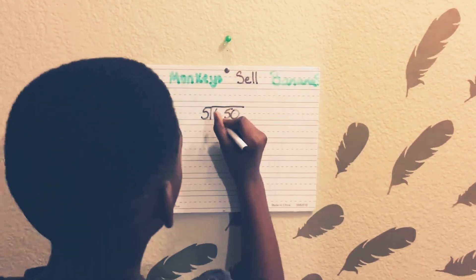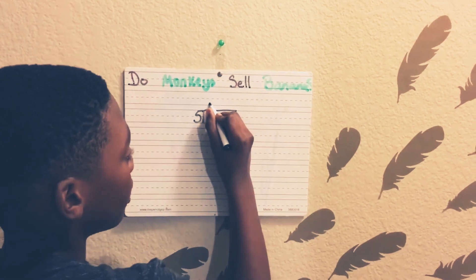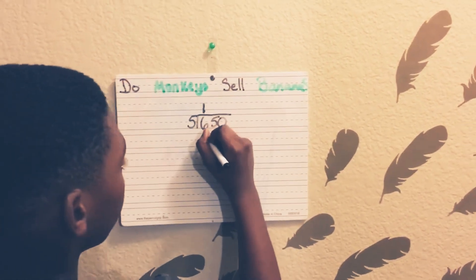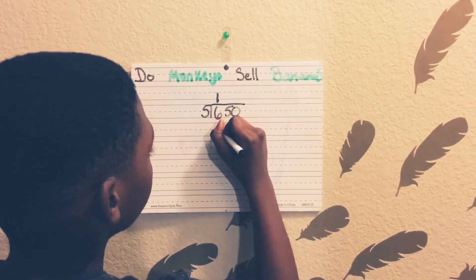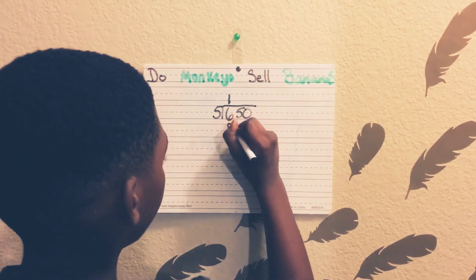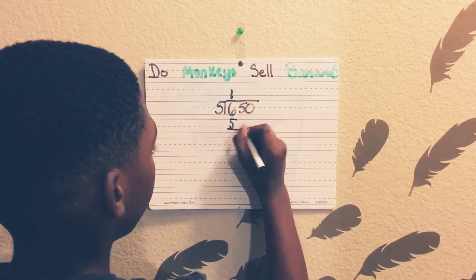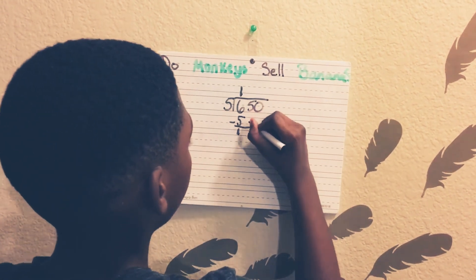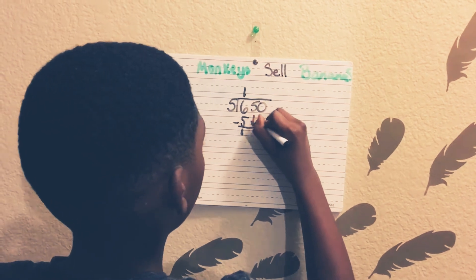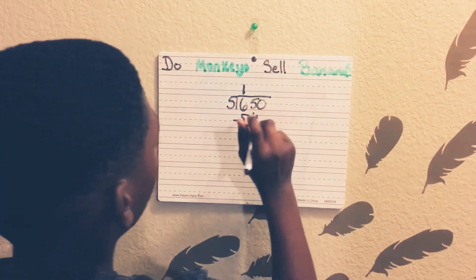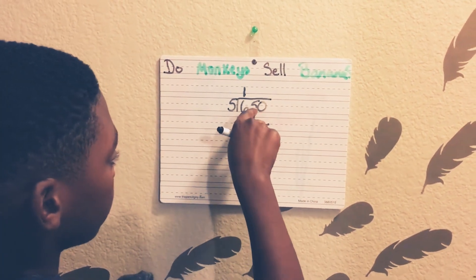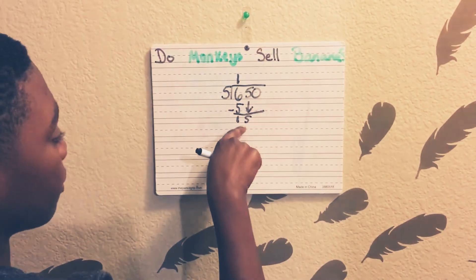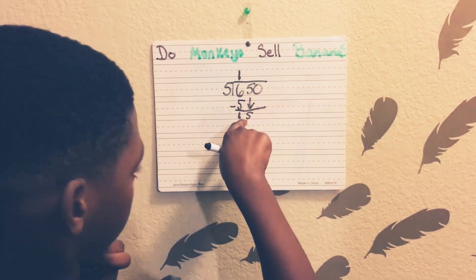5 goes into 6 one time because if you go over the 6, you can't divide it. You can't subtract it. So 5 minus 6 equals 1. Then you got to bring down the 5. You don't count this 5, but you do count the bottom number every time you subtract and bring it down.